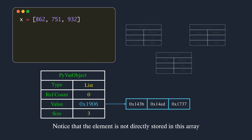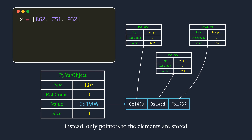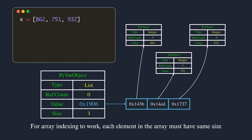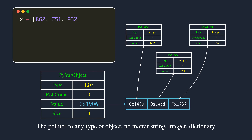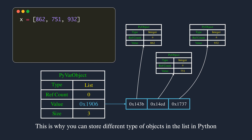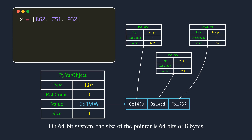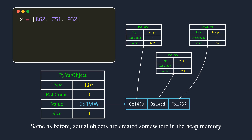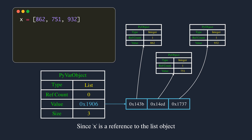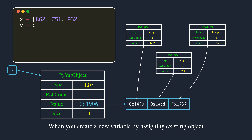The value field is a pointer to the memory location of the storage array where actual elements are stored. Notice that elements are not directly stored in this array — only pointers to the elements are stored. For array indexing to work, each element in the array must have the same size. A pointer to any type of object — string, integer, dictionary — will have the same size. This is why you can store different types of objects in a Python list. On a 64-bit system, the size of the pointer is 64 bits or 8 bytes.